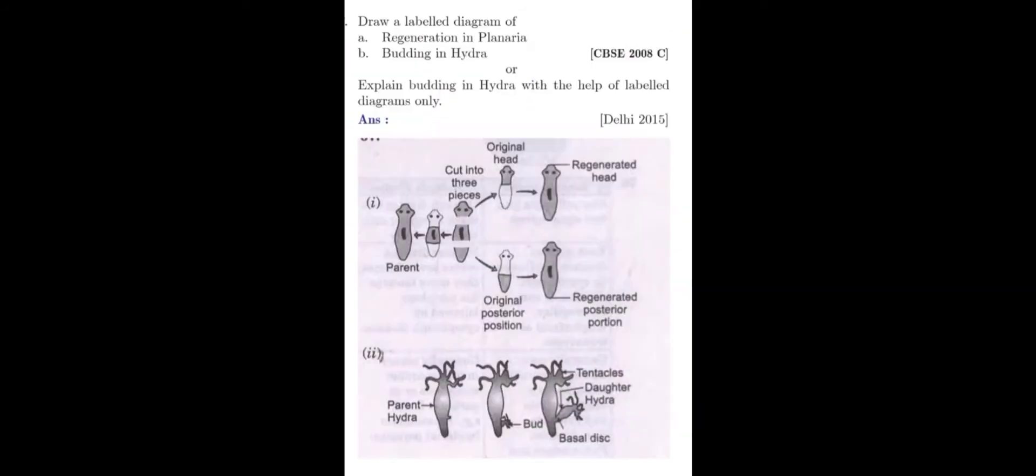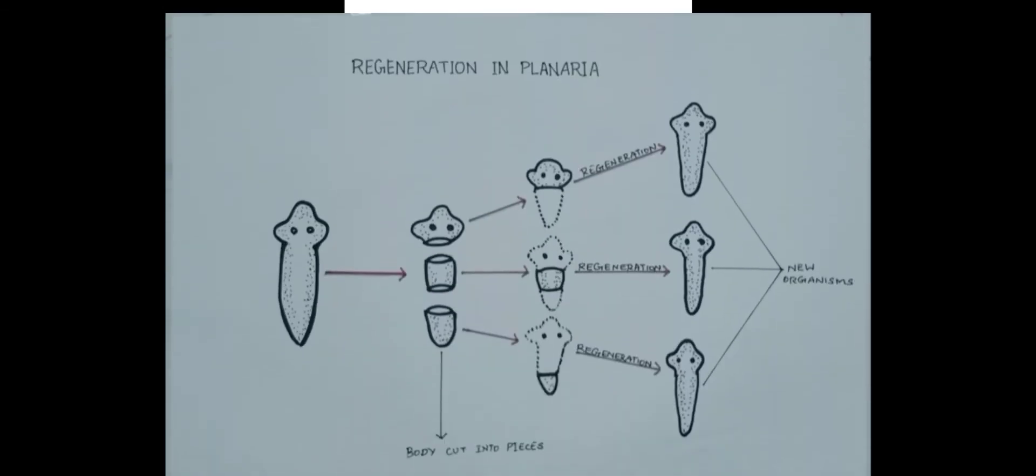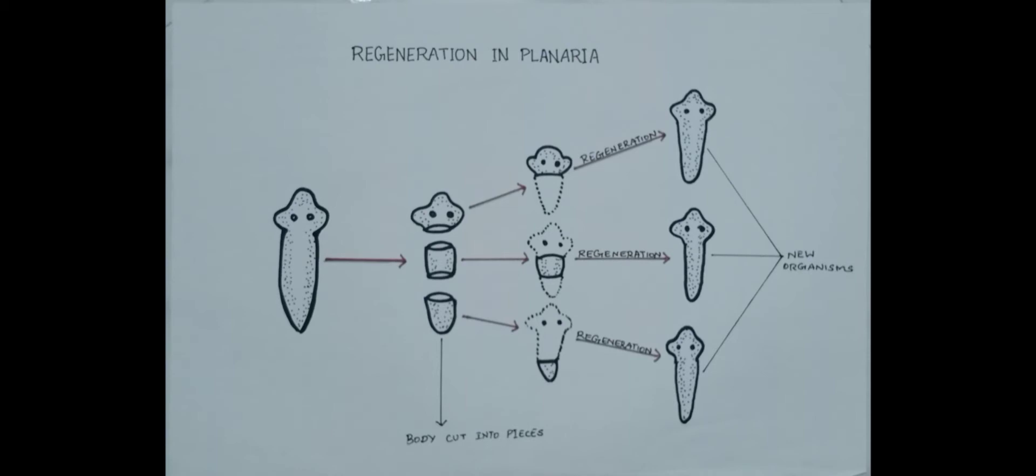Question number three. Draw a labeled diagram of regeneration in planaria and budding in hydra. Two diagrams you are supposed to draw. Here is the answer for regeneration in planaria. First you can show the entire organism and how the organism is getting cut into pieces and how each piece develops or grows the remaining part of the body. In the book there are no labelings but a student is expected to label whatever is possible even though it's not given in the reader.